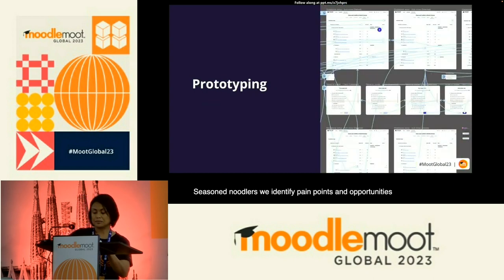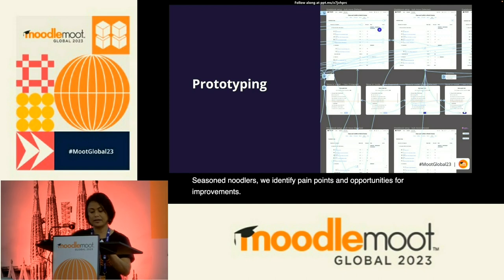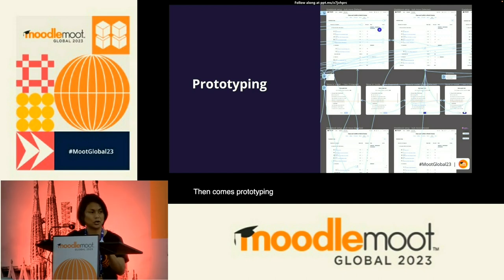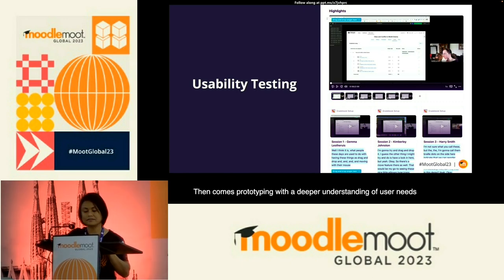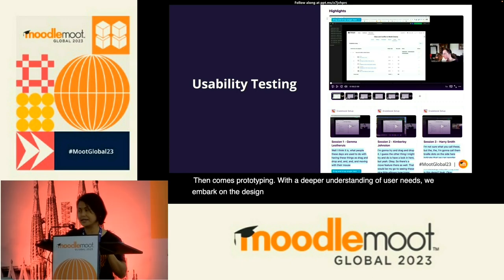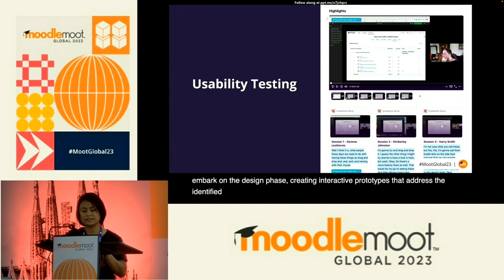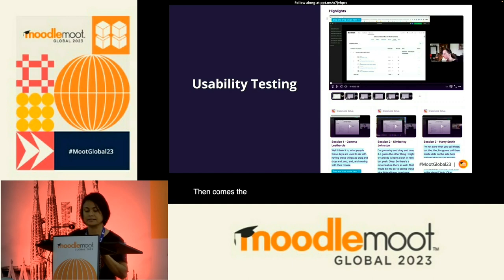Then comes prototyping. With a deeper understanding of user needs, we embark on the design phase, creating interactive prototypes that address the identified pain points. Then comes usability testing — the phase where we validate our prototypes through sessions with community members, gathering feedback to assess proposed changes and determine what works and what doesn't.